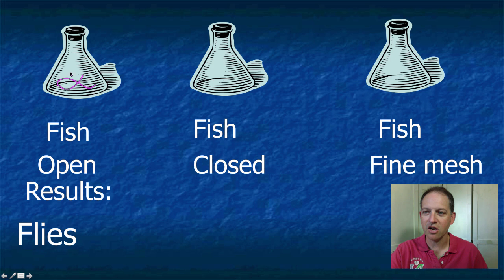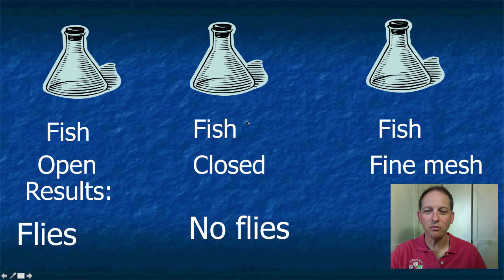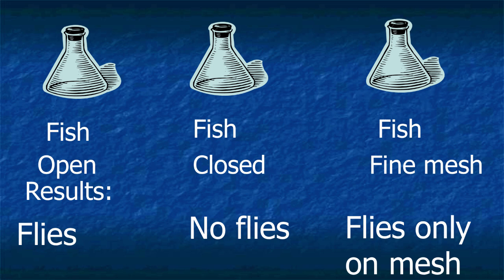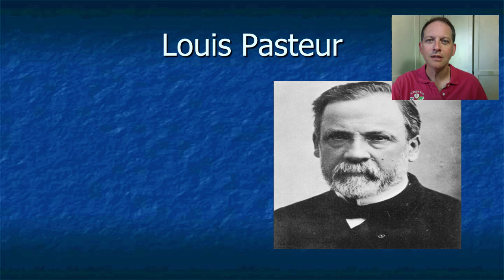Here are the results. After a few days, the open jar had lots of flies on the inside where the dead fish was. The second one, closed up tight — no flies. The third one — flies buzzing around on top, but no flies on the inside where the dead fish was. So Redi concluded: if the fish were actually making the flies, there should be flies inside vial three. There were not, so he concluded that spontaneous generation was wrong.